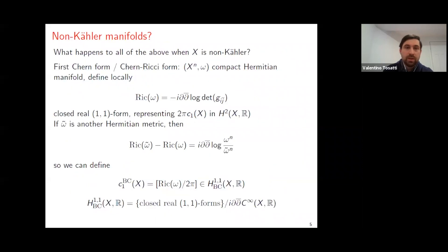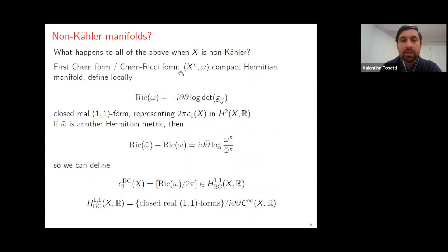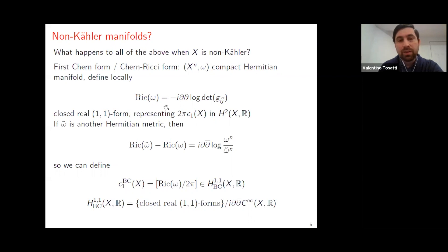The theme of this talk is what happens to these results when X is non-Kähler. The Ricci curvature will not be the Riemannian one from the Kähler case, but will be replaced by the first Chern form or Chern-Ricci form — a classical object, already appearing in the paper by Kähler. For a Hermitian manifold, where Omega now denotes a Hermitian metric without assuming d-Omega is zero, you can still define locally a Ricci form by locally taking minus i dd-bar log of the determinant of the metric tensor. This is a global object, a closed real (1,1)-form, representing up to 2π the first Chern class of X in the usual cohomology.